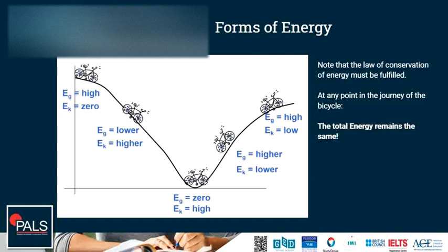At the lowest point, the bike has the highest kinetic energy and no more gravitational potential energy. It climbs up the hill again and gains gravitational potential energy while it slows down and loses kinetic energy, until it reaches the highest point again and the gravitational potential energy is high and the kinetic energy low.